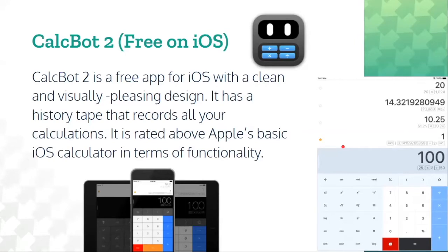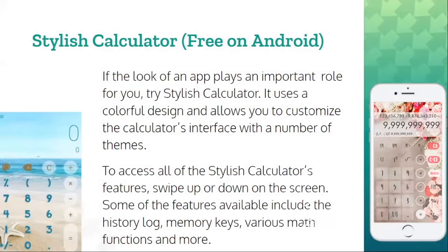Next is CalcBoat 2, which is free on iOS. CalcBoat 2 is a free app for iOS with a clean and visually pleasing design. It has a history tape that records all your calculations and is rated above Apple's basic iOS calculator in terms of functionality. If you are looking for a more visually appealing calculator, the Stylish Calculator is the one for you — it is free on Android. It uses a colorful design and lets you customize the interface with themes. Swipe up or down to access features including a history log, memory keys, and various math functions.